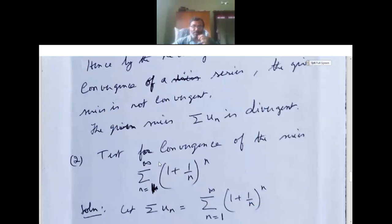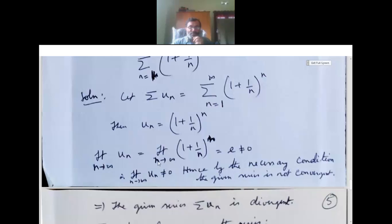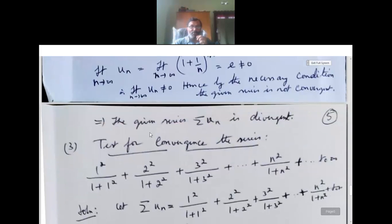We take one more example: test for convergence of the series sigma n equals 1 to infinity of (1 + 1/n)^n. We have un equals (1 + 1/n)^n and we apply limit n tends to infinity un. This is a standard formula: limit n tends to infinity (1 + 1/n)^n equals e, a constant between 2 and 3. So e is not equal to 0, meaning limit n tends to infinity un is not equal to 0. By the necessary condition, the given series is not convergent, so sigma un is divergent.